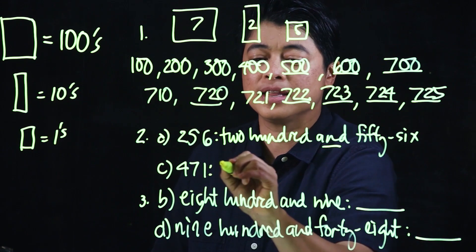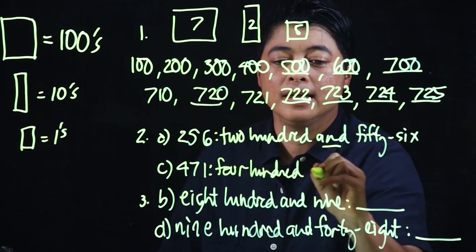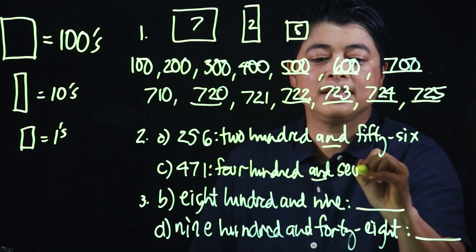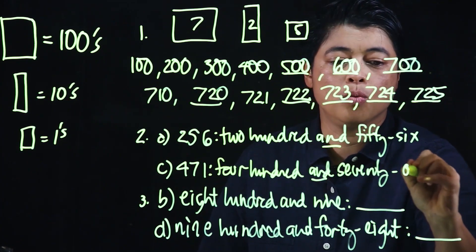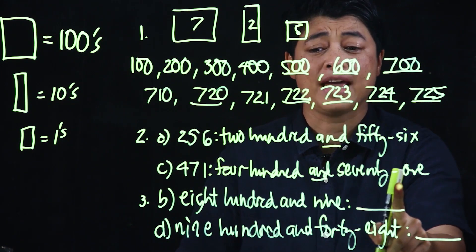So which means for this one, this is four-hundred-and-seventy-one. So there's the dash, which is required of them.